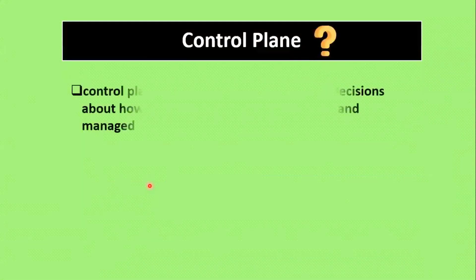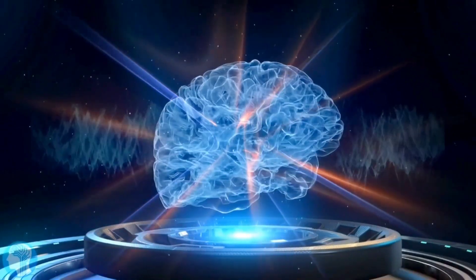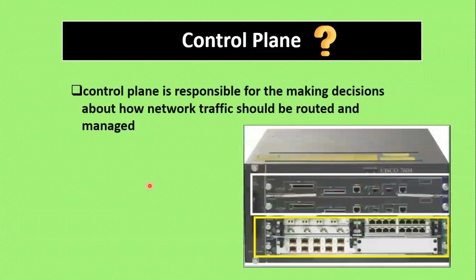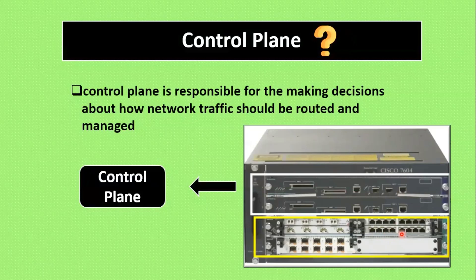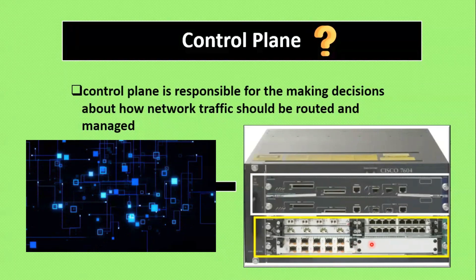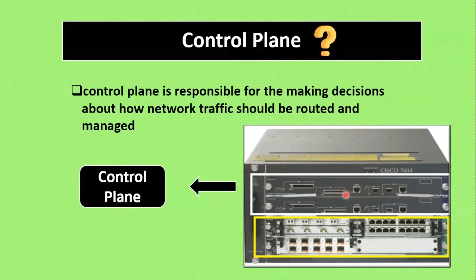Moving to the control plane: in traditional networking, the control plane acts as the brain of the network. Routers use protocols and algorithms to exchange routing information and make decisions on how packets should be forwarded. The control plane determines the optimal paths for network traffic. The I/O model interfaces connect to laptops, PCs, or other devices, and all inbound and outbound traffic is routed based on the decisions and instructions given by the control plane.